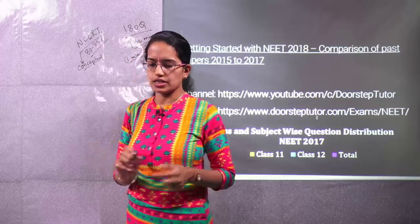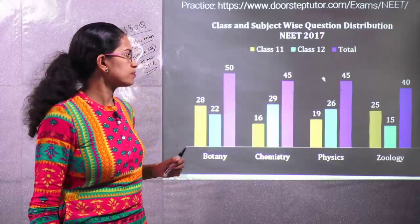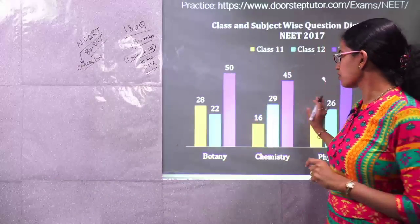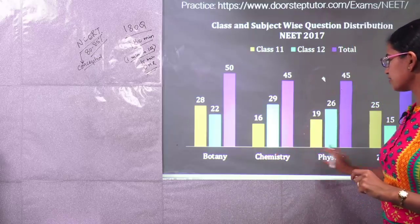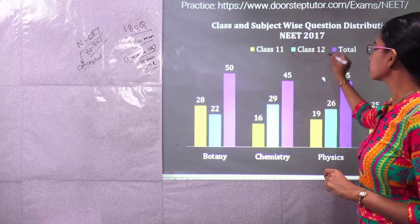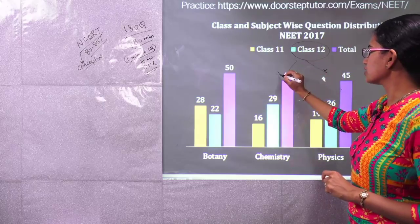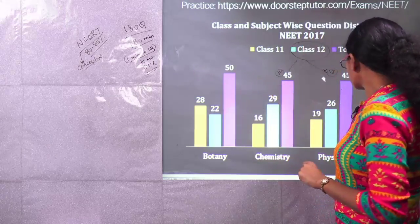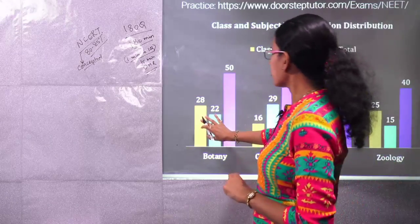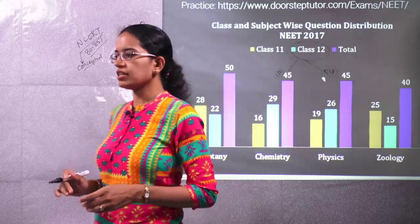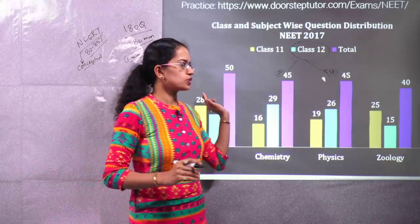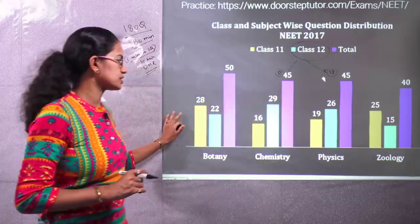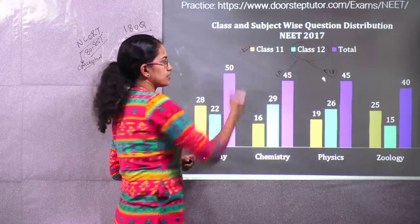When we talk about the questions asked from class 11 and class 12 sections, statistics from past papers show that for chemistry and physics, most questions came from class 12 — so class 12 is very important for those subjects. However, for the biology section, class 11 is given more weightage, and within biology, the botany section has more weightage compared to zoology. Make sure you are thorough with your class 11 biology.